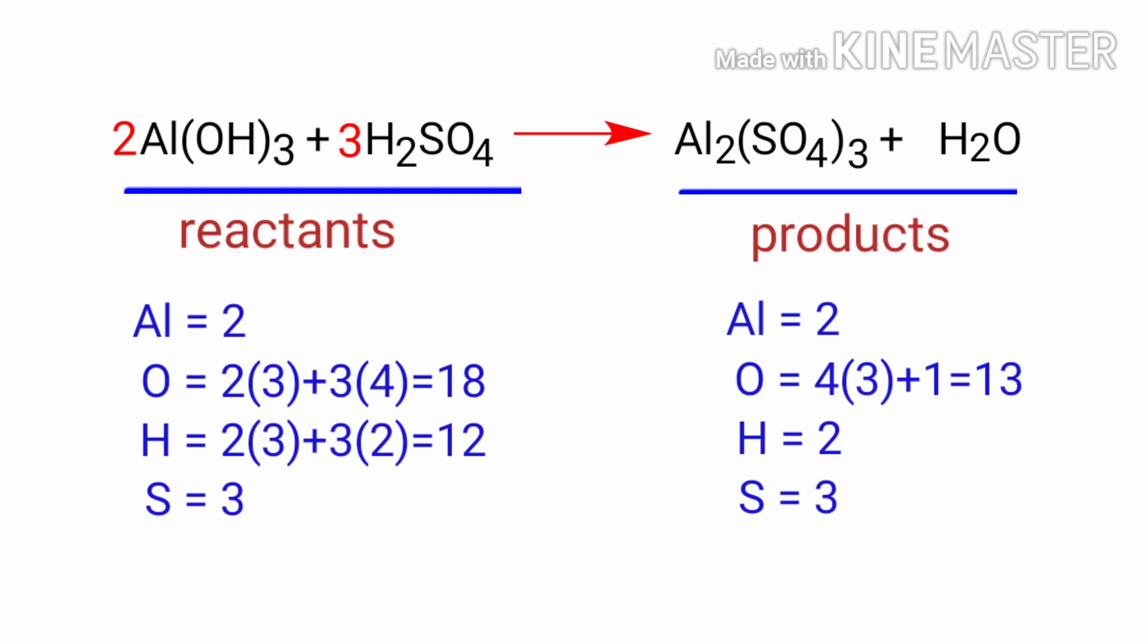Now we need to balance the hydrogen and oxygen atoms. To do this, we need to put a coefficient of 6 in front of H₂O.